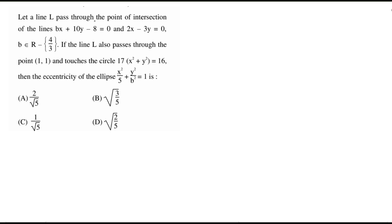Let a line L pass through the point of intersection of the lines bx plus 10y minus 8 equal to 0 and 2x minus 3y equal to 0, where b belongs to the set of real numbers minus 4 by 3. If the line L also passes through the point (1,1) and touches the circle 17 times (x² plus y²) equal to 16, then find the eccentricity of the ellipse x²/5 plus y²/b² equal to 1.